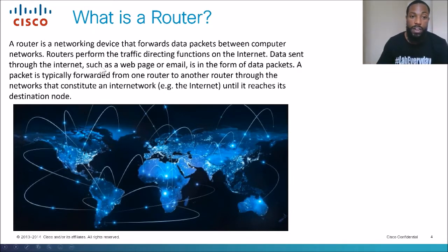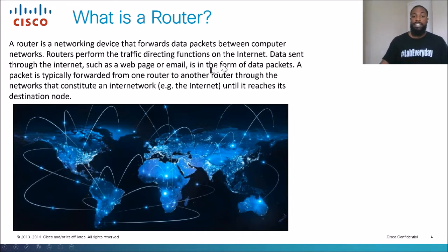It's a networking device that forwards data packets between computer networks. Routers perform the traffic directing functions on the internet — kind of like a traffic cop — taking all the information and sending it off to another network. Data sent through the internet, such as a webpage or email, is in the form of data packets.